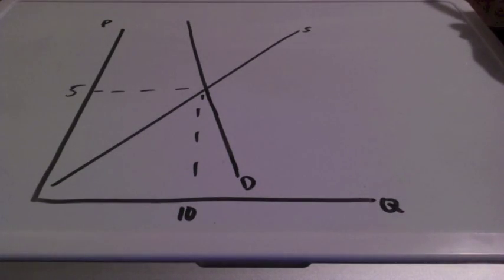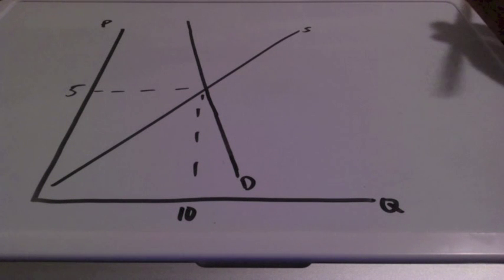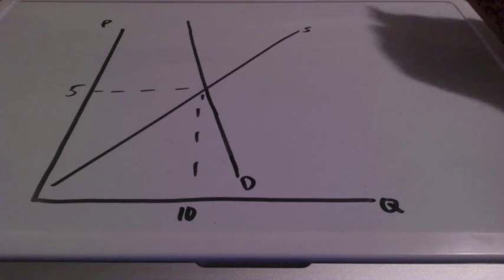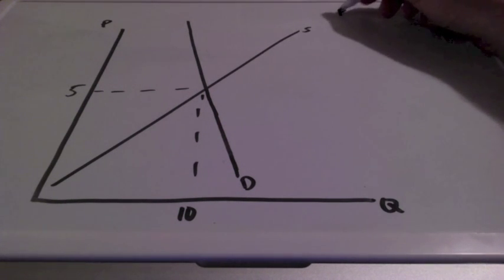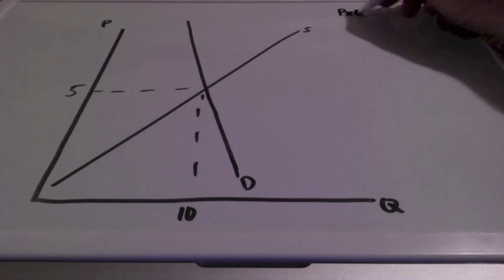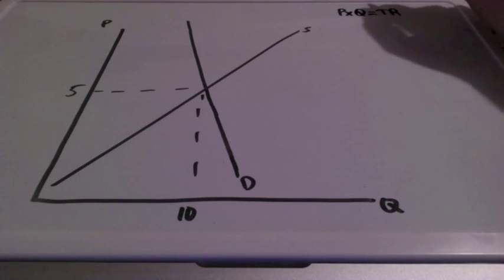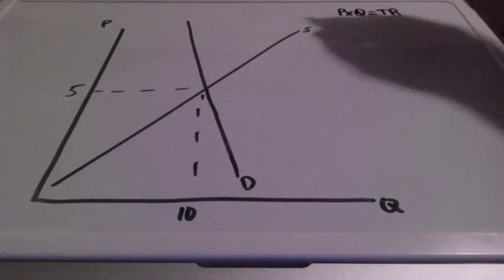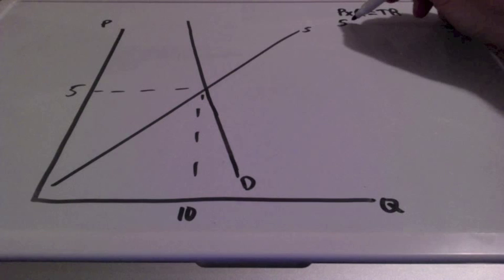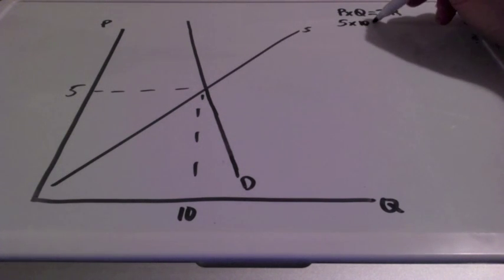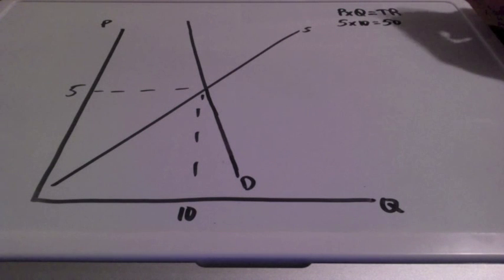So visually, we should already know that we're dealing with inelastic demand. We first have to find our equilibrium total revenue. Our price is 5, our quantity is 10, so our total revenue is 50.